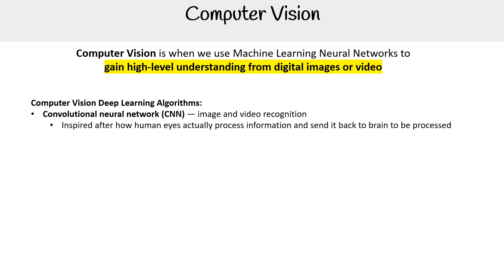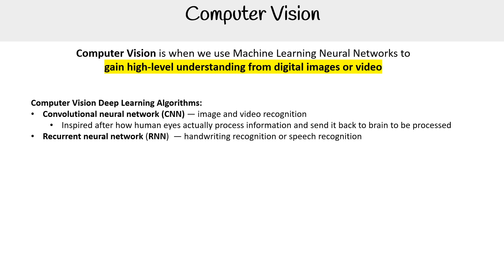Convolutional neural networks are for image and video recognition. They're inspired by how the human eye actually processes information and sends it back to the brain to be processed. We also have recurrent neural networks, RNNs, which are generally used for handwriting recognition or speech recognition. Of course, these algorithms have other applications, but these are the most common use cases for them.